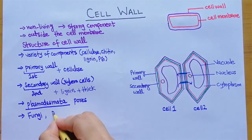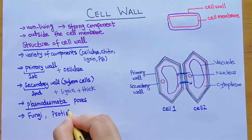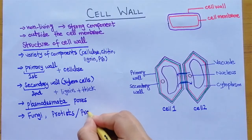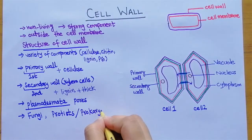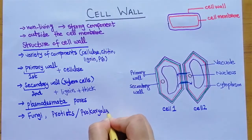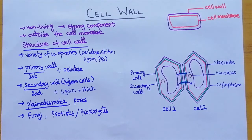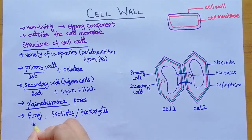Fungi, protists, and prokaryotes also contain a cell wall. However, the cell wall of these organisms is entirely different from the cell wall of plant cells, because of the different components present. For example, fungi contain chitin in their cell wall.